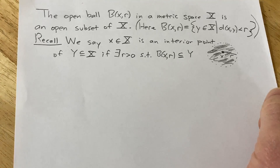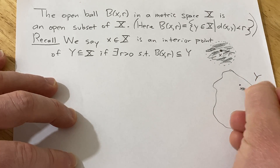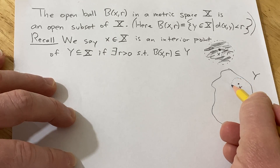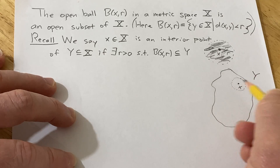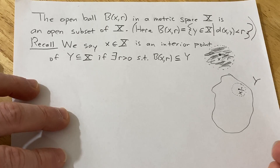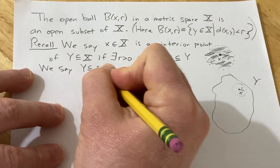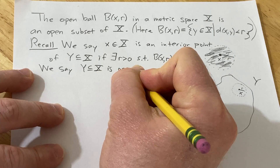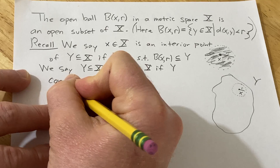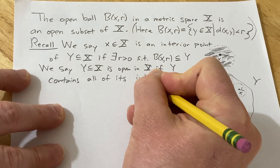That basically means: let's say this is Y, and you have a point x. Then x will be an interior point if you can find some radius r such that there's an open ball contained entirely in Y. We say a set Y subset of X is open in X if Y contains all of its interior points.